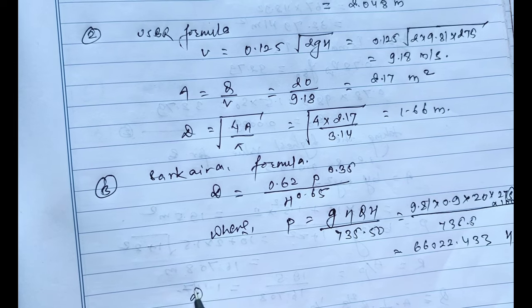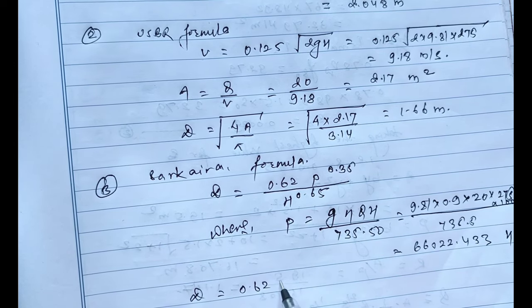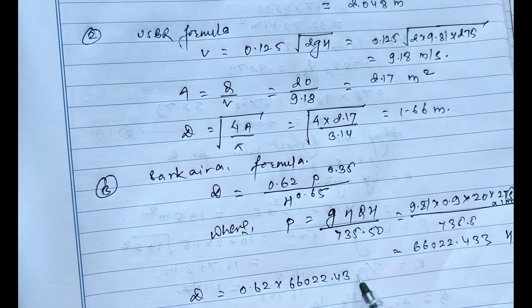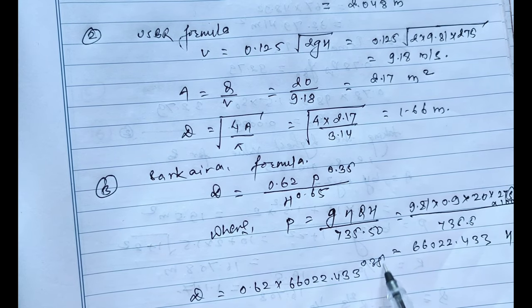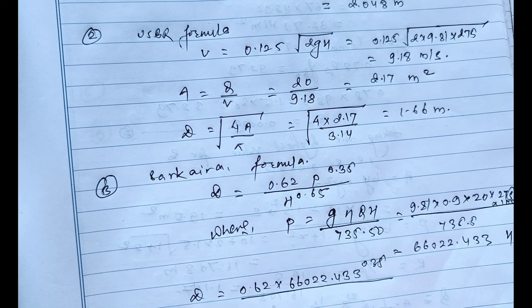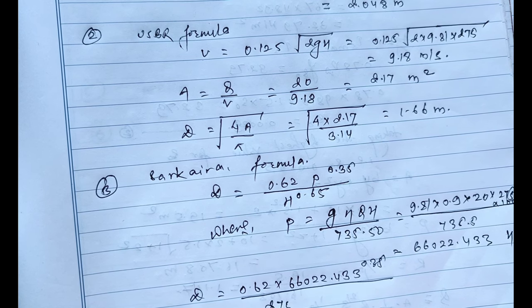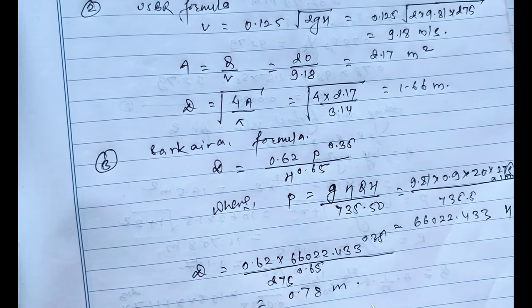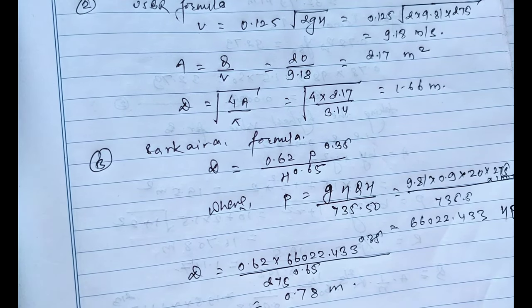Now placing the value of P in D equals 0.62 into 6602.433 to the power 0.35 divided by 275 to the power 0.65. On solving this equals 0.78 meters.